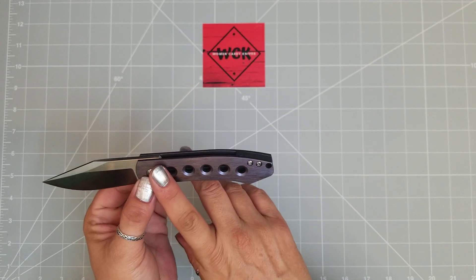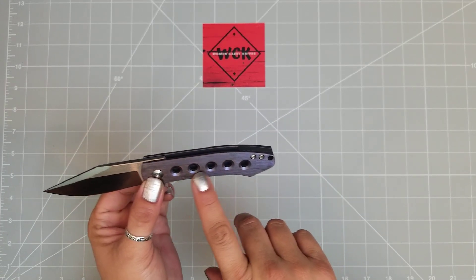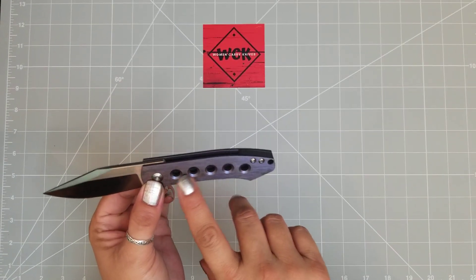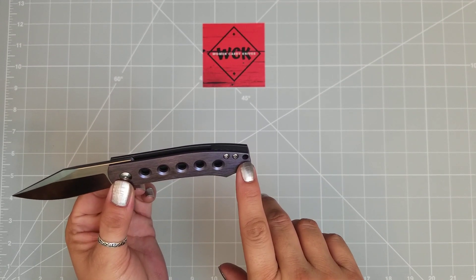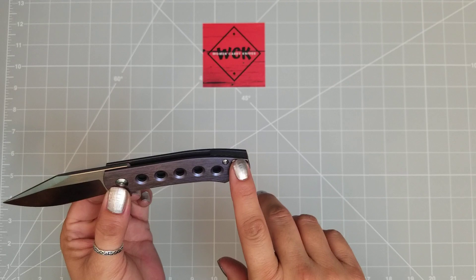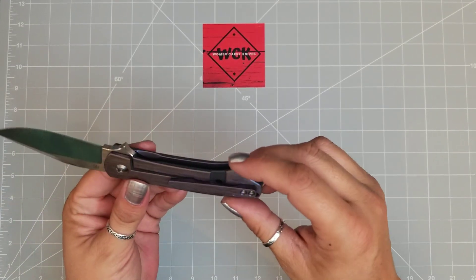It is a titanium handle with this beautiful brushed anodization. I love the holes in this handle. I think that's really cool. You have the lanyard hole here, just in case. On this side...